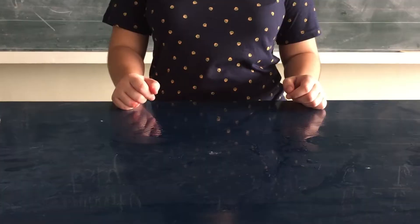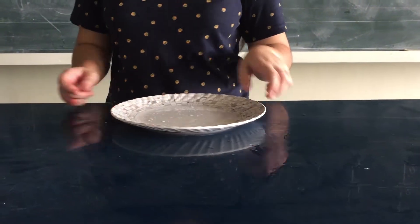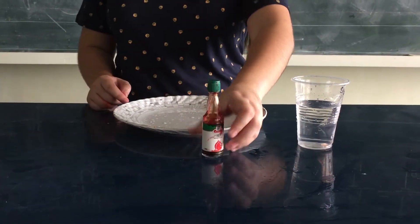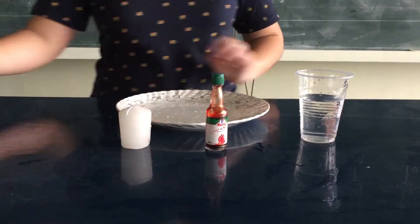The materials needed for this experiment are a shallow dish, some water, food coloring, candles, and a jar.